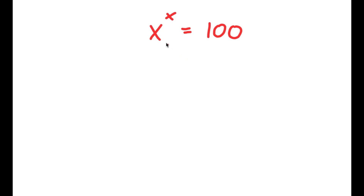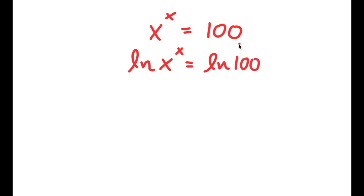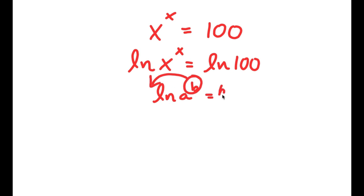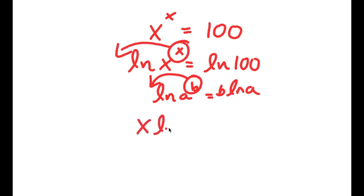In this problem, I have x to the power of x equals 100. I start by taking the natural log (ln) on both sides, giving ln of x to the power of x equals ln of 100. Using the property that ln of a to the power of b equals b times ln a, I move x to the front and get x times ln x equals ln 100.